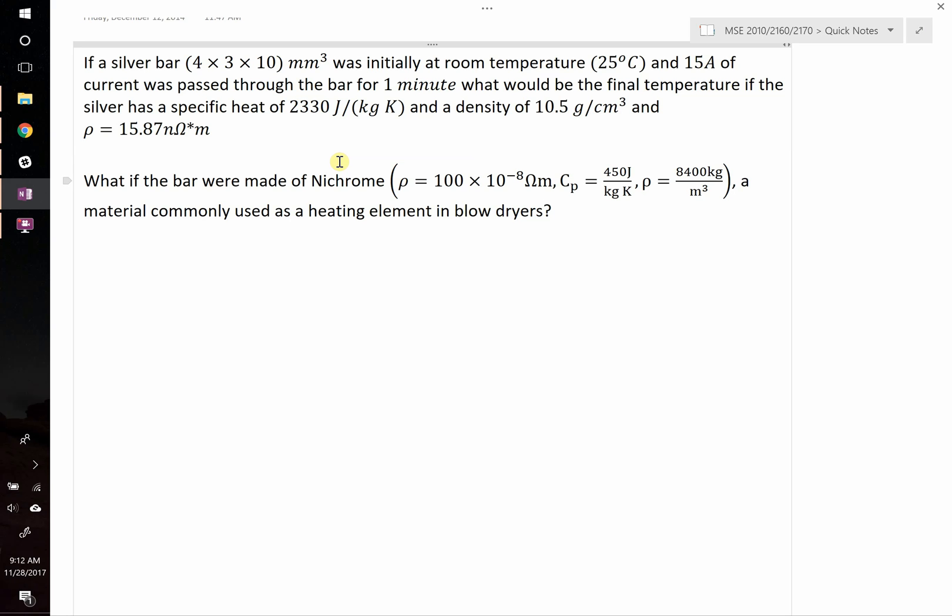And then we're asked, well what if the bar was made of nichrome, which has different properties, considering that this material is commonly used as a heating element in blow dryers.